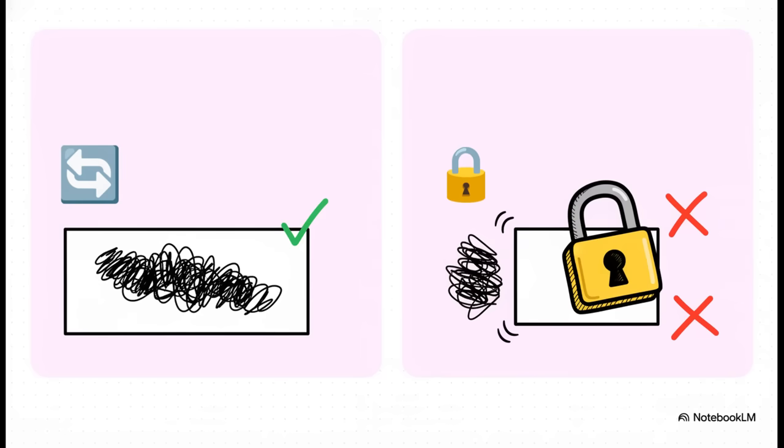But what if you have a value that you absolutely, positively do not want to change ever? For that, we use something called a constant. All you do is add this little keyword, final, before you create it. And that tells the computer, lock this box and throw away the key. If you try to change it later, nope, you'll get an error. And this is a huge deal in bigger programs because it stops you or someone else on your team from accidentally changing a really important number, like the number of days in a week. It's a safety net, and it makes your code way more reliable.